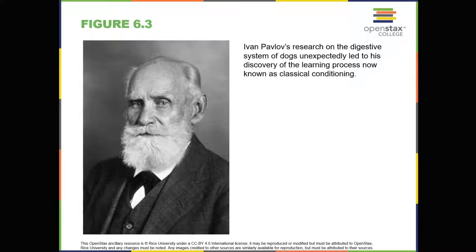To explore this phenomenon in an objective manner, Pavlov designed a series of carefully controlled experiments to see which stimuli would cause the dogs to salivate. He was able to train the dogs to salivate in response to stimuli that clearly had nothing to do with food, such as the sound of a bell, a light, and a touch on the leg. Through his experiments, Pavlov realized that an organism has two types of responses: unconditioned or unlearned responses, or reflexes, and conditioned or learned responses.